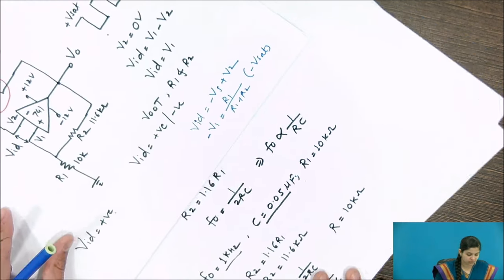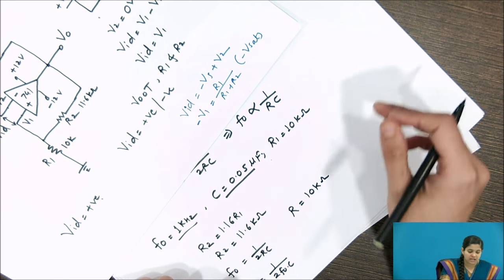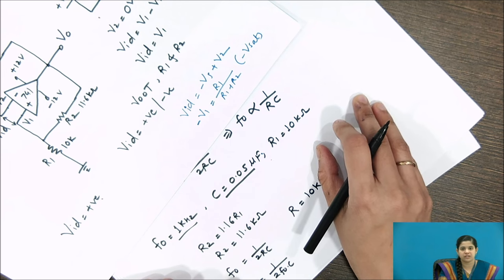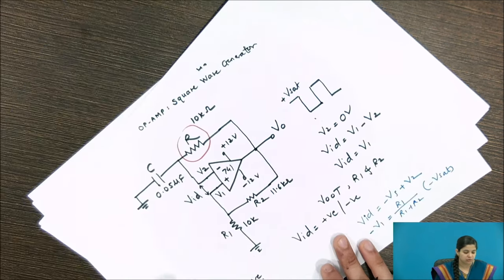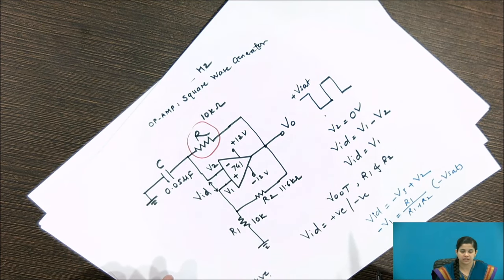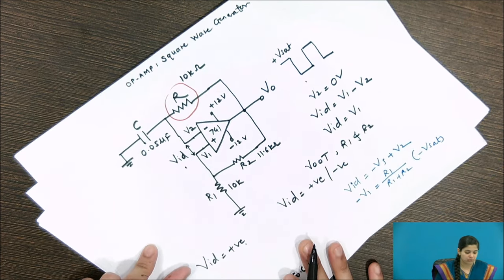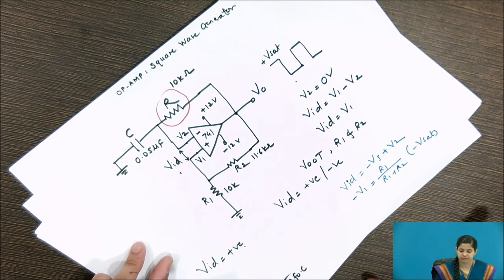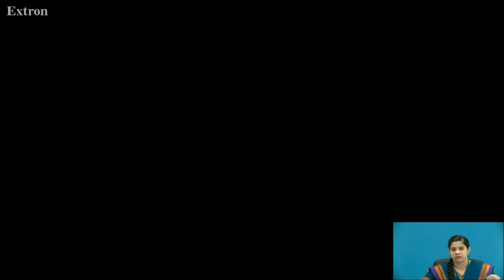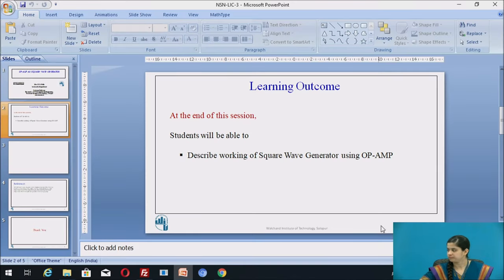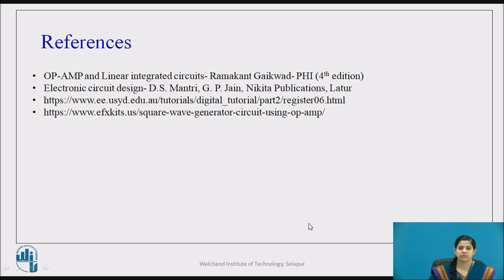The higher frequency output of the op-amp is limited by the slew rate of the operational amplifier. As a precaution, we must connect a series resistor Rs at the inverting and non-inverting terminals, because these terminals are practically subjected to very large differential current due to the large differential voltage VID while switching from plus saturation to minus saturation. This is how the square wave generator works. These are the references. Thank you.